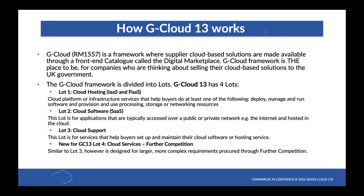Let's talk about how G-Cloud 13 works. It's RM1557 — the RM stands for route to market. G-Cloud is a framework where cloud-based solutions and services are made available through a front-end catalogue called the digital marketplace. It's a good place to be for companies thinking about or currently selling cloud-based solutions to the UK government. The framework is divided into lots or buckets for services, and G-Cloud 13 now has four lots.